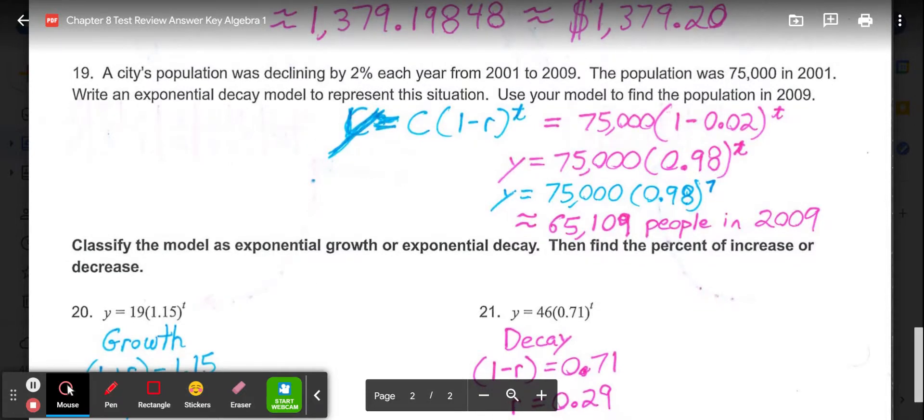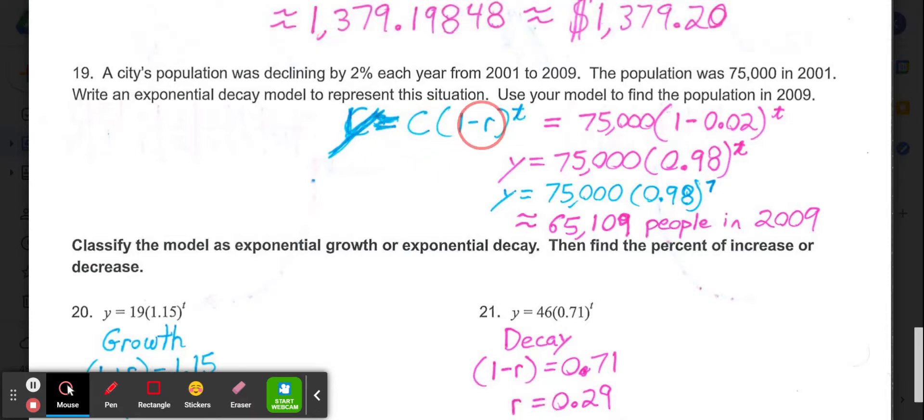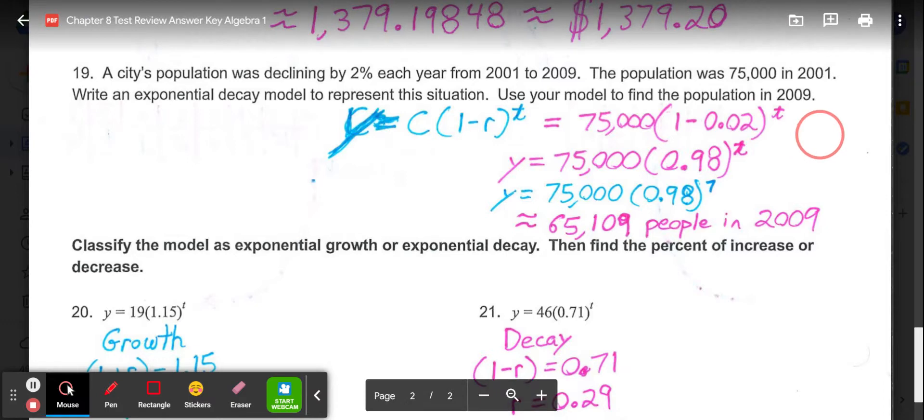For 19, population is declining by 2% each year from 2001 to 2009. Population started at 75,000 in 2001. Write the decay model and then use the model to predict or find the population in 2009. So in this case it's a decay model. So we have y equals c, then in parentheses 1 minus r to the t. So our initial population 75,000, in parentheses 1 minus 2% as a decimal, 0.02 to the t power.